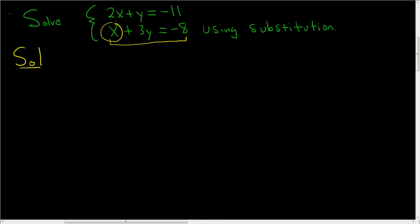After we solve for x, we plug the x into the first equation. So let's go ahead and do that. I'll write down the second equation first. So x plus 3y equals negative 8, and we're going to solve this equation for x.